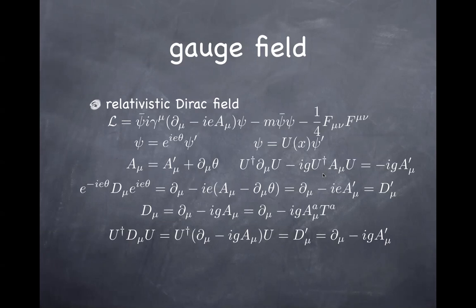I now denote the coupling constant by g instead of e, which is common notation in the literature — perhaps g stands for gauge. In the case where U is just a phase factor, A_μ commutes with e^{iθ}, so we recover the standard QED gauge transformation. But when U is really a matrix, U and A_μ may not commute because A_μ is itself a matrix. This is just the same idea as QED, generalized to n×n matrices.